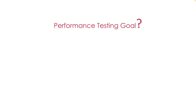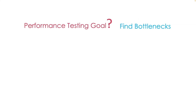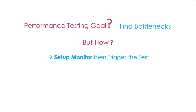Before we start, I want you to understand the basic concept, because most people misunderstand it. What's the goal of performance testing? The only answer is to find bottlenecks, or what someone calls performance issues or problems. But how can we achieve this goal? Essentially, the first thing we need to do is to set up a monitor, then trigger the test. Only triggering testing is not enough. As a performance testing expert, we need to know how to set up monitors and how to analyze performance bottlenecks. That's why I prepared this course series.